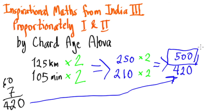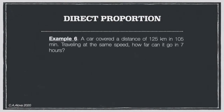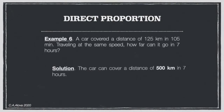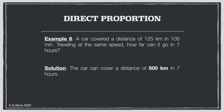This is one application of the sutra Proportionately — we proportion the numbers in such a way that it eventually leads us to the answer. The car can cover a distance of 500 kilometers in 7 hours.